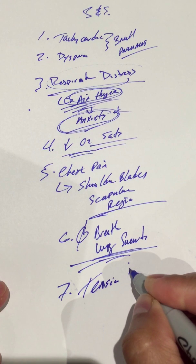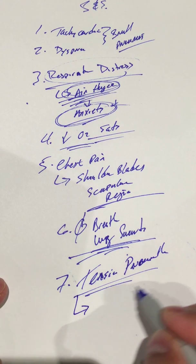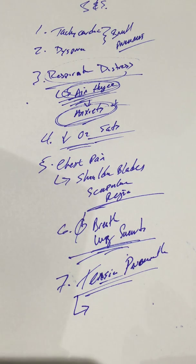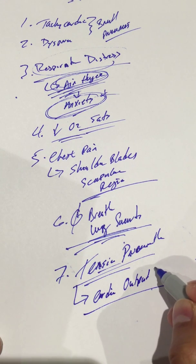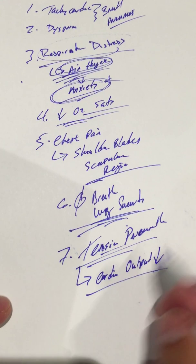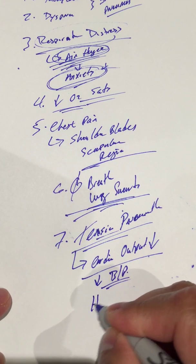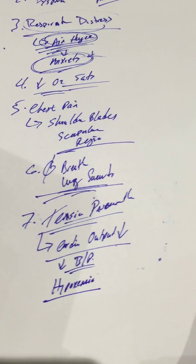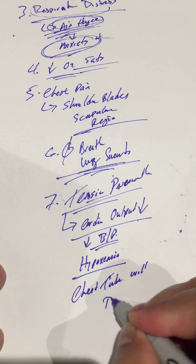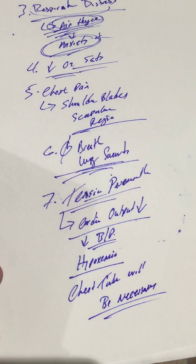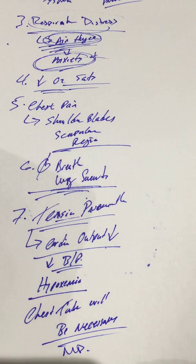We're going to mention tension pneumo again because this is a medical emergency. With patients suffering from a tension pneumothorax, we talked about how everything's going to be shifted — so cardiac output will be affected. We'll have decreased cardiac output which would lead to decreased blood pressure. We'll also have hypoxemia. So for these patients, a chest tube is crucial.